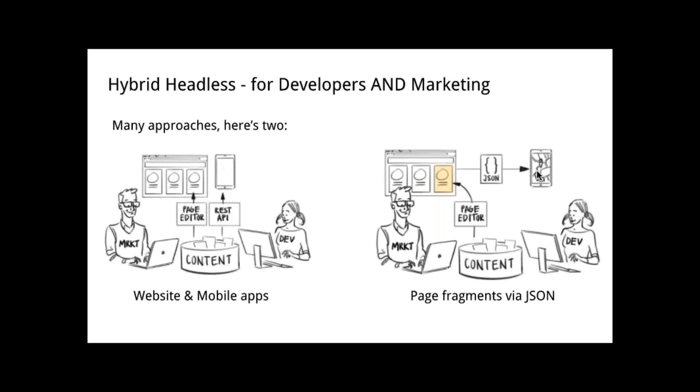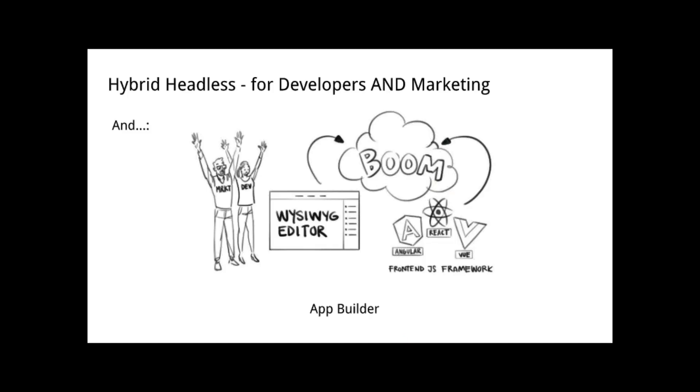I'd like to close with something very interesting based on that last point — somebody working in the page editor and that structured content making an app. This is almost the ultimate step of headless and traditional coming together. The idea is that your marketer is working with a WYSIWYG editor, but it doesn't need to be converted between Magnolia templating and front-end templating. We're actually able to edit a front-end app — instead of using FTL, we're using Angular or React directly in the Magnolia page editor. This was presented by Adrian at the Unconference, and I call it an app builder — you're actually building a front-end app in Magnolia.